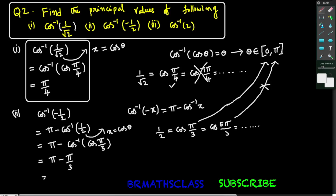So what is pi minus pi by 3? Taking LCM 3, we get 3 pi minus pi, that is 2 pi by 3. Therefore, the principal value of cos inverse of minus 1 by 2 is 2 pi by 3.